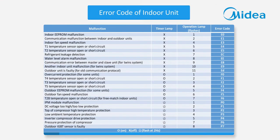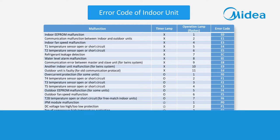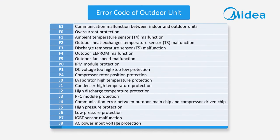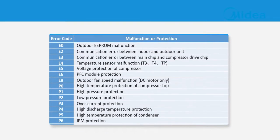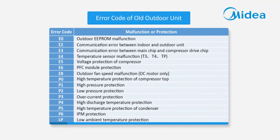When an error occurs, the error code will be shown on both the display board of indoor units and the digital display of outdoor units. This table lists all the error codes of indoor units you may encounter. For indoor units without digital display, pay attention to the status of running light and timer light. This table lists all the error codes of outdoor units you may meet. If the indoor unit shows ED, the outdoor unit must be using an old communication protocol, and the error codes of old outdoor units are shown in this table.